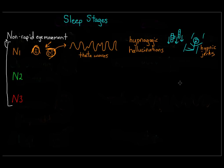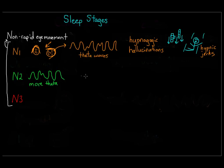That's N1, the lightest stage of sleep. Then we move into N2, which is a slightly deeper stage of sleep. Although it's still pretty easy to wake someone in N1, people in N2 are harder to awaken. We see more theta waves as well as something called sleep spindles and K-complexes.